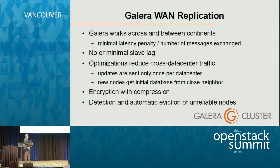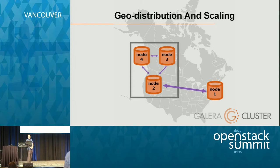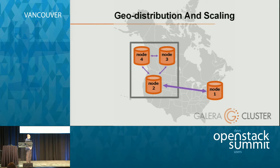We also provide SSL encryption for the communication between data centers, which also brings in compression. And we have automatic eviction of unreliable nodes. For example, if node number one is misbehaving — not fully down and not fully up because of some network problem — it will temporarily be removed from the cluster so that the rest of the nodes can continue to process writes. This helps with any network issues across wide area networks. When the network issue is resolved, node one can be brought back up and it will synchronize with the rest of the nodes.